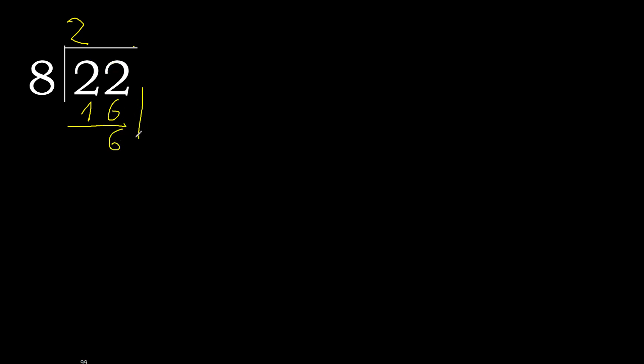Next — there is no more digit, therefore complete with 0. Always complete with a decimal point here. Point complete. 6 — bring down.